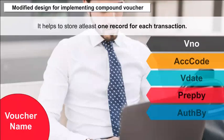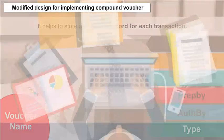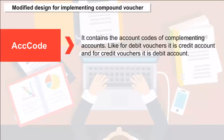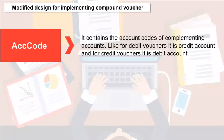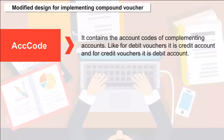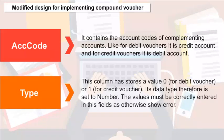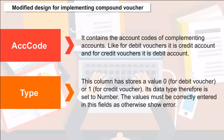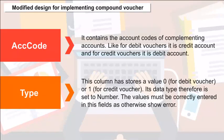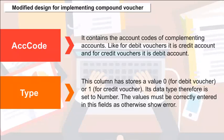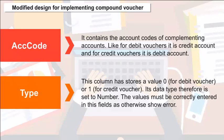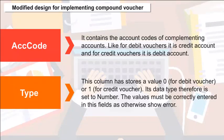ACC Code contains the account codes for complementing accounts — for debit vouchers it is the credit account, and for credit vouchers it is the debit account. Type: This column stores a value of 0 for debit vouchers or 1 for credit vouchers; data type is number. The values must be correctly entered in these fields, as otherwise it will show an error.